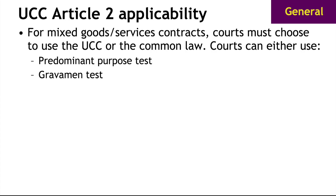A lot of contracts involve both goods and services. For example, you contract to have a machine installed in your factory — you get the machine, they deliver it, install it, and teach you how to use it. It's a mixture of goods and services. If you're a court with a dispute, you have to pick either the UCC or the common law of contracts to govern that transaction. You apply one of two tests. The first, which almost all courts apply, is the predominant purpose test: at the time of contracting, what was the predominant purpose — were they really after the good or the services? There's also the Gravamen test, not used by many courts, which looks at the dispute and the gripe the party has. You do that analysis and then decide whether you're dealing with the UCC.